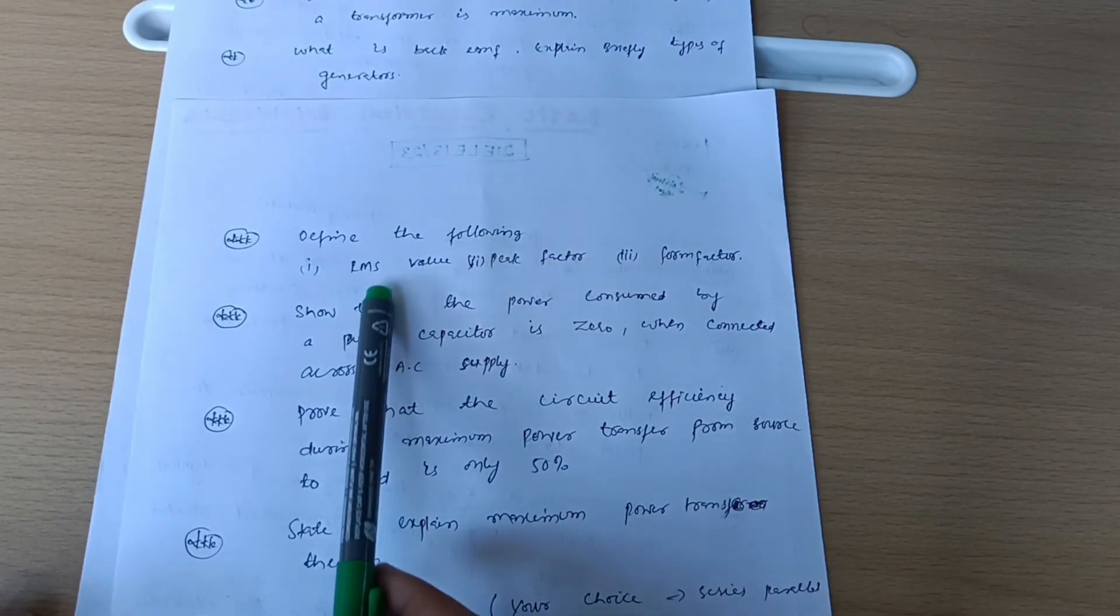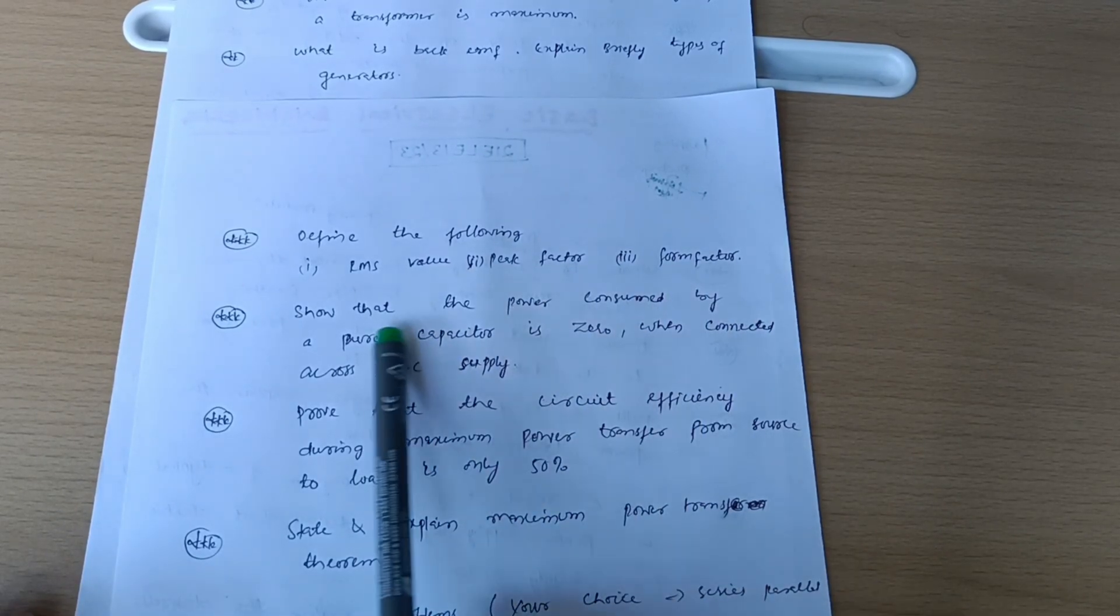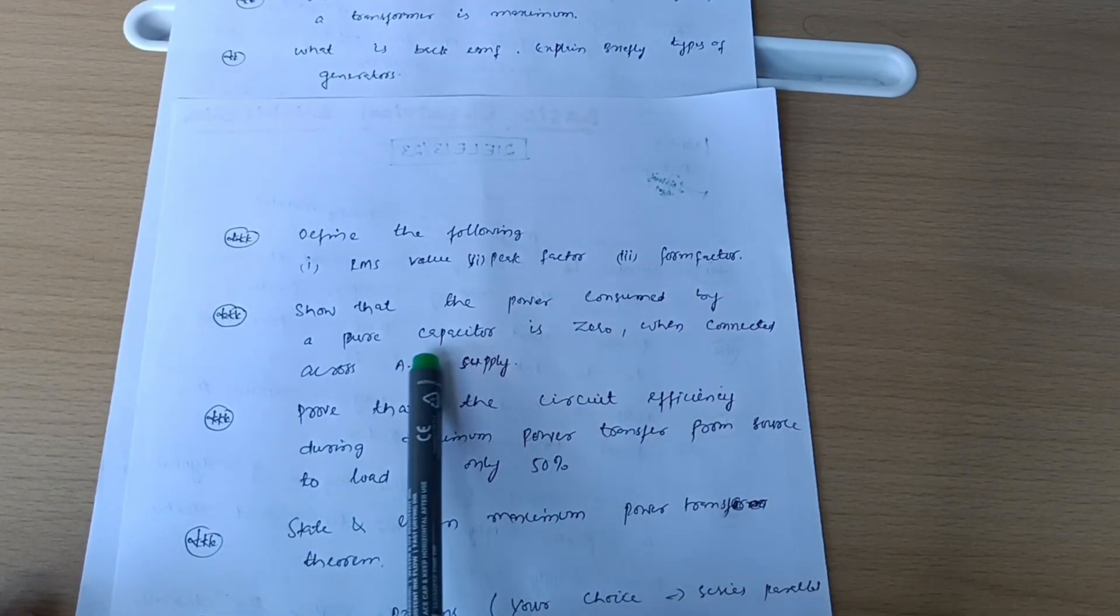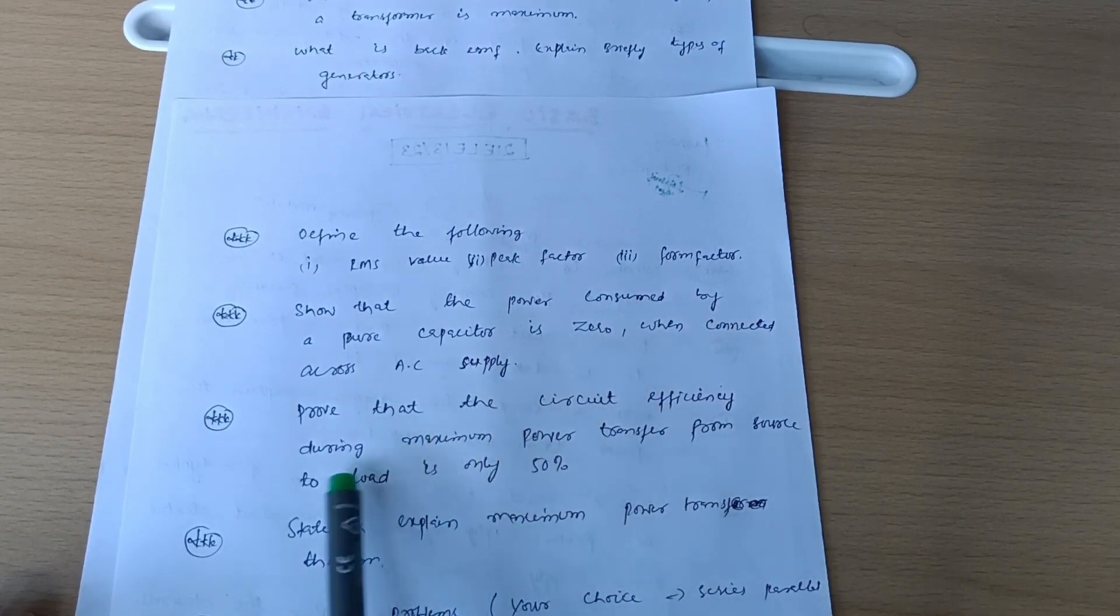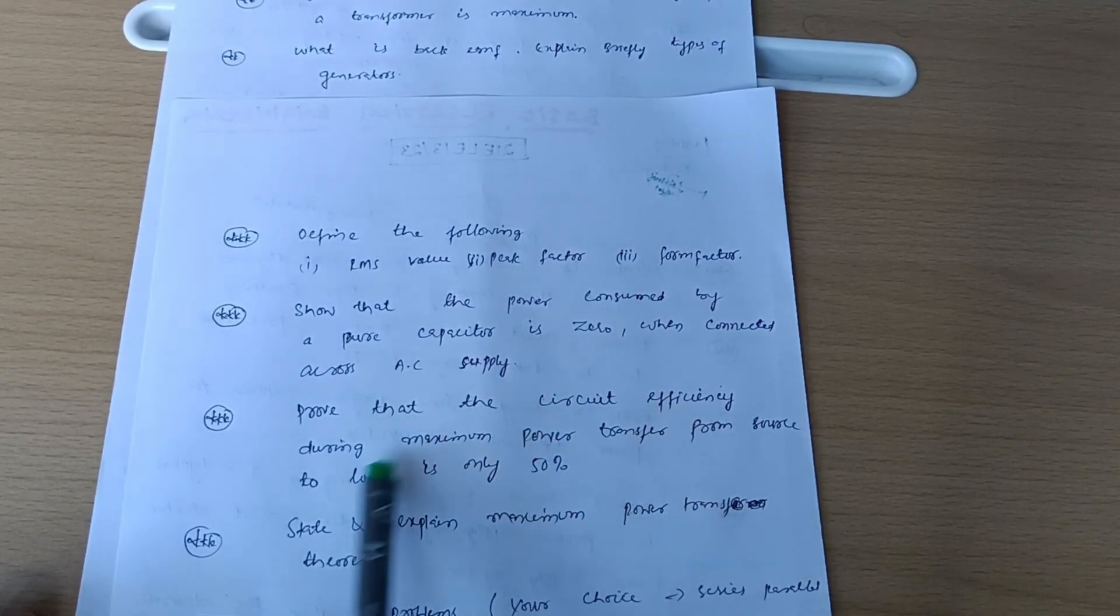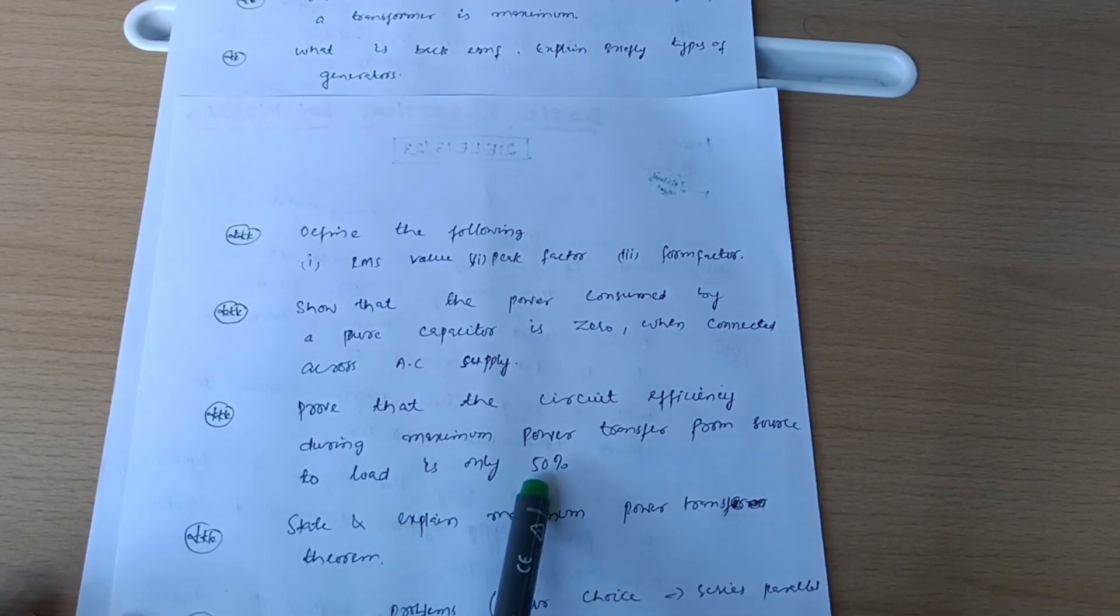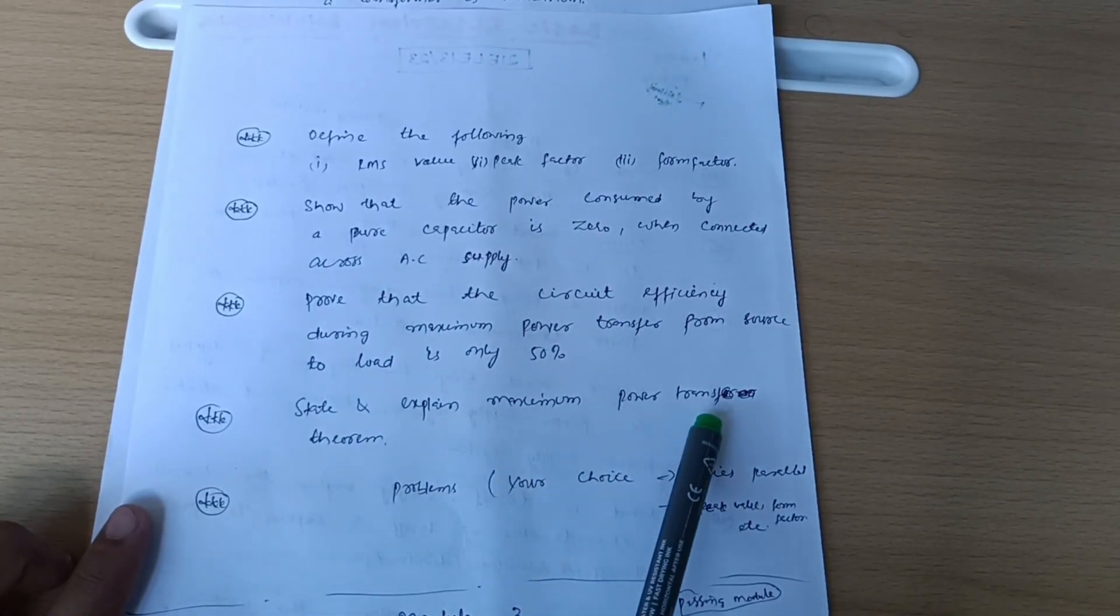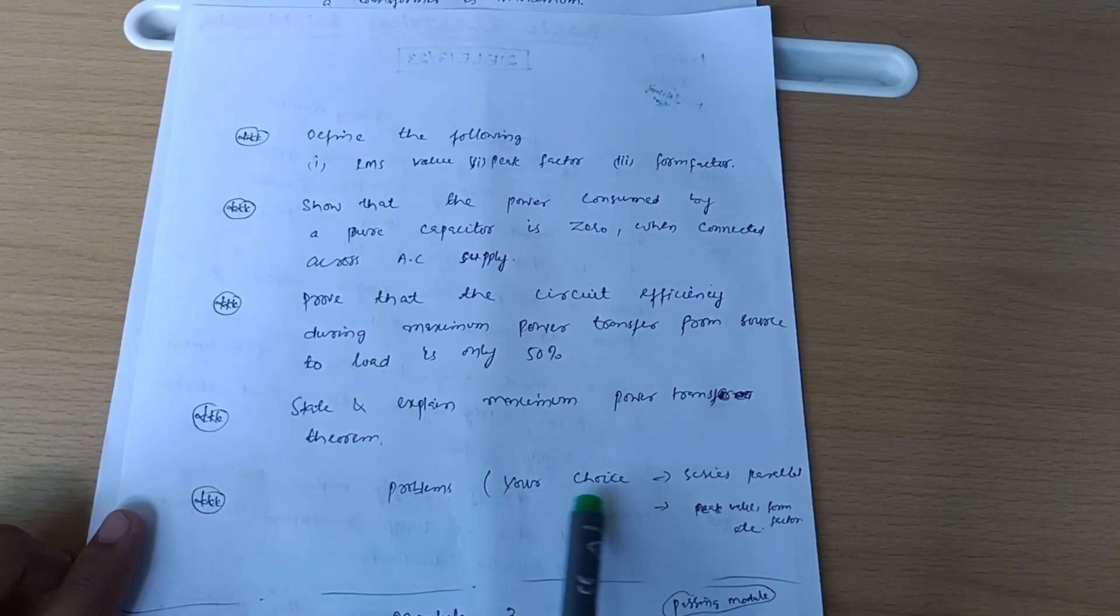Next is define the following: RMS value, peak factor, and form factor. Show that the power consumed by pure capacitor is zero when connected across AC supply. Prove that the circuit efficiency during maximum power transfer from source to load is only 50%. State and explain maximum power transfer theorem and problems.